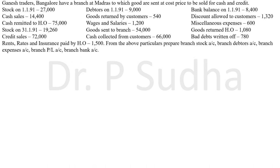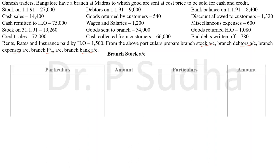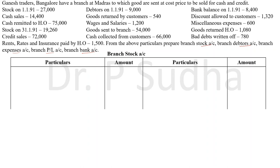Let us now work out branch accounts with a problem. Ganesh Traders, Bangalore has a branch at Madras to which goods are sent at cost price to be sold for cash and credit. We will prepare branch stock account, branch debtors account, branch expenses account, P&L account, and branch bank account. The first is branch stock account — since it is an asset, the opening balance is recorded in the debit side. Opening stock on 1-1-91 is 27,000.